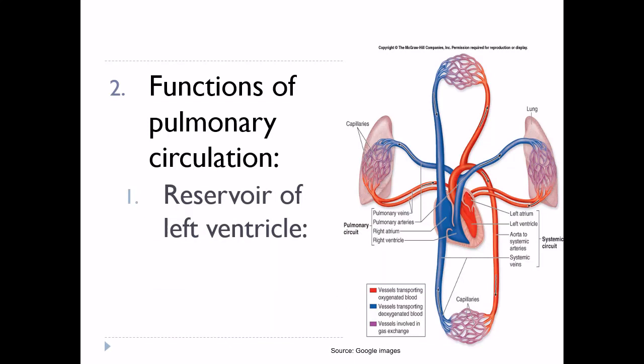Functions of pulmonary circulation: first and foremost, pulmonary circulation acts as a reservoir of the left ventricle. When left ventricular output becomes transiently greater than the systemic venous return, the blood stored in the pulmonary circulation helps to maintain left ventricular output for a few strokes.